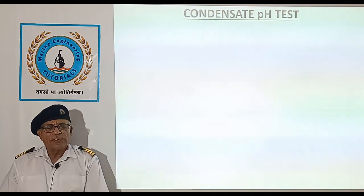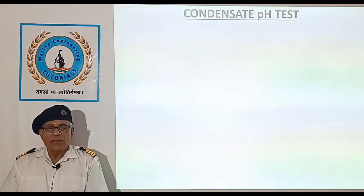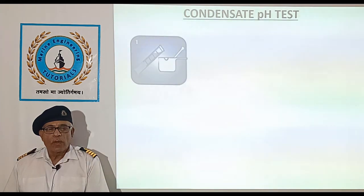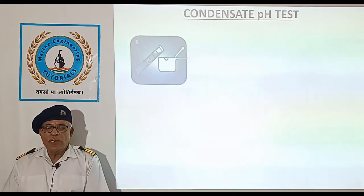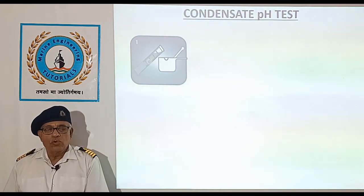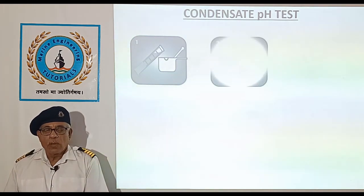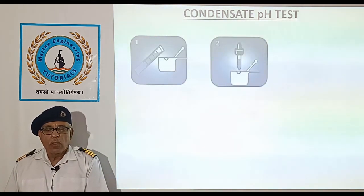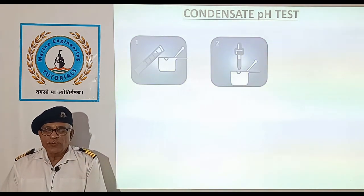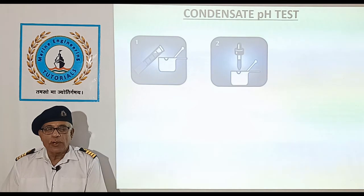The last test is the Condensate pH Test. The following procedure is used to carry out the condensate pH test. Collect 50 millilitres of cold condensate sample and pour into an evaporating dish. Add 3 drops of phenolphthalein indicator — the sample should turn pink.